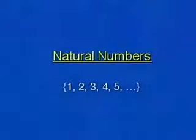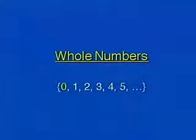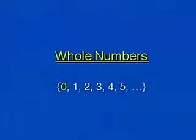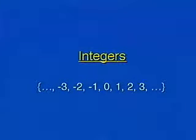Let's begin by looking at the common sets of numbers, starting with the natural numbers: one, two, three, four, five, and so on. The next set is the whole numbers — notice that zero is included, so it's the natural numbers plus the element zero.